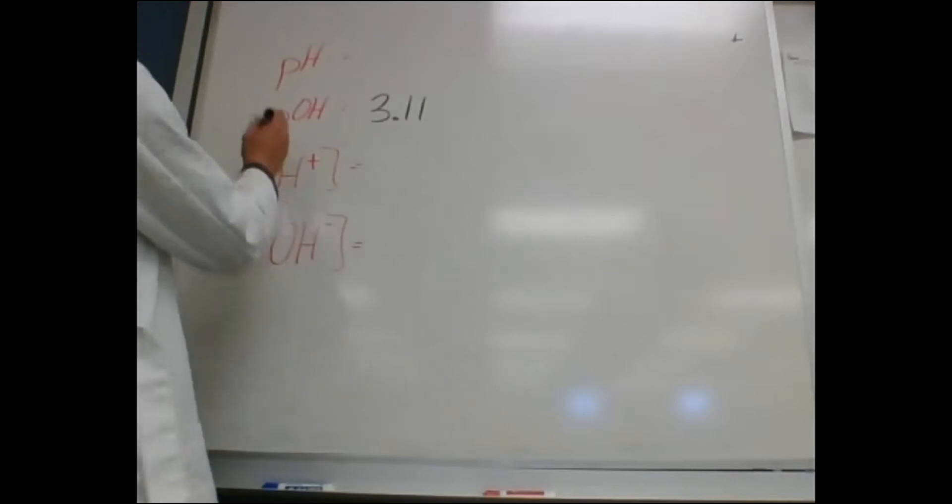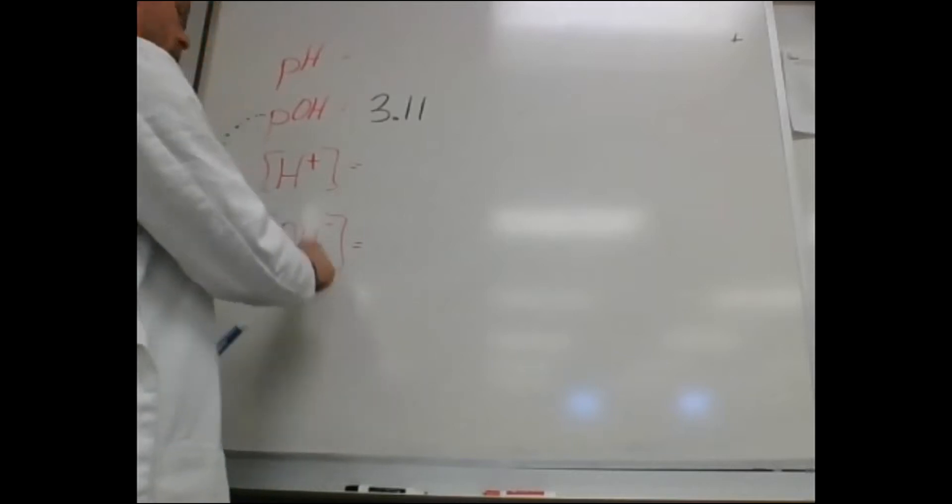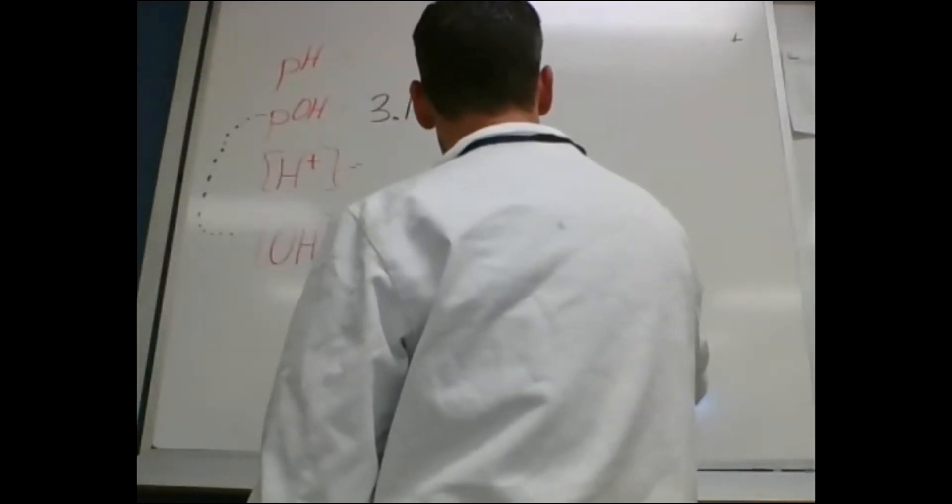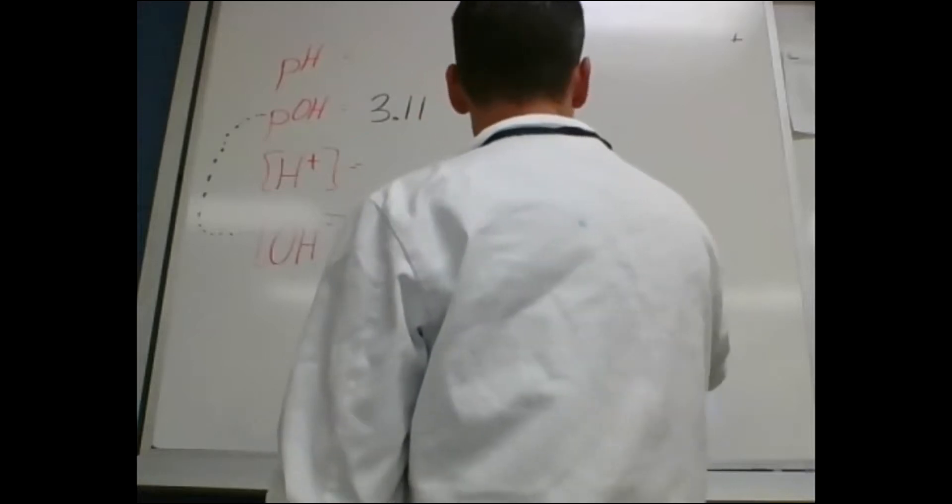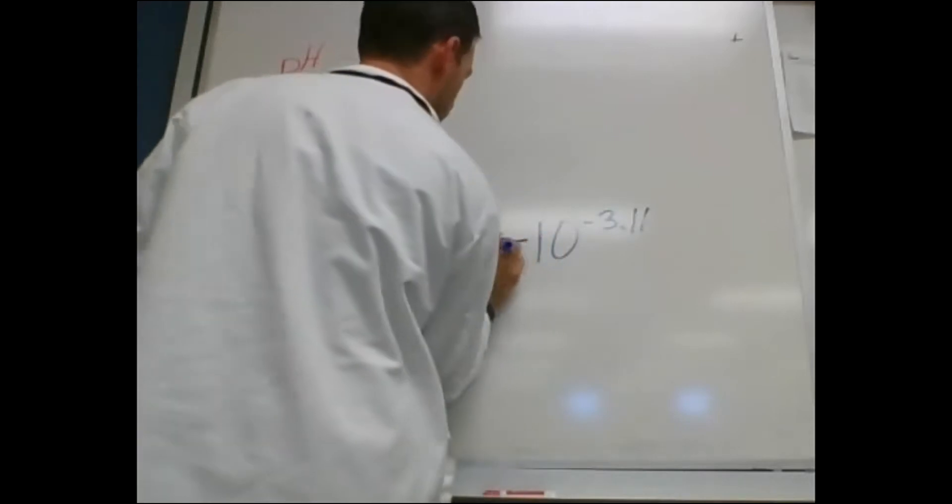Now, I know there is a direct correlation between POH and OH minus. Do you agree? Yes. Okay. Now, in order to go that direction, to find a concentration from a POH, I need to take the base 10 and raise it to the negative power. And it'll give me that number.